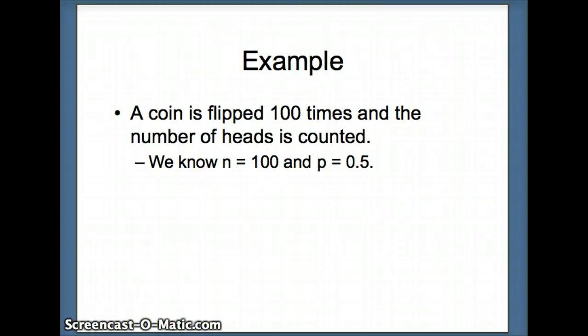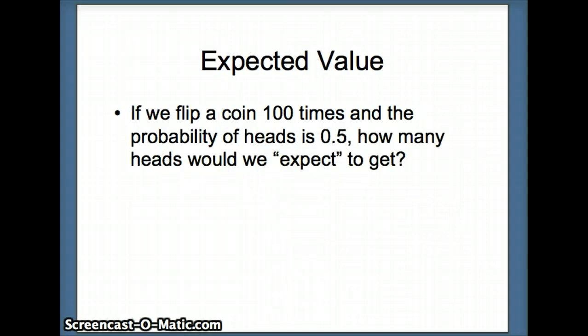Let's look at another example. A coin is flipped 100 times, and the number of heads is counted. So this time we have n equals 100, 100 independent trials. Probability of success on a given trial is 0.5. So how many heads would we expect to get? 100, half of them are heads, we would expect to get 50. We don't expect to get exactly 50, but on average, if we did this experiment many times, on average we would get about 50 heads. So our expected number is 100 times 0.5.